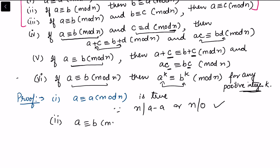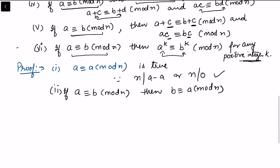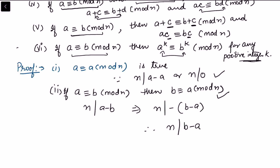For property two, we want to show that if a is congruent to b modulo n, then b is congruent to a modulo n. If a is congruent to b modulo n, then n divides a minus b. Taking a negative sign common, n divides negative of (b minus a), which means n divides b minus a. So both hold.